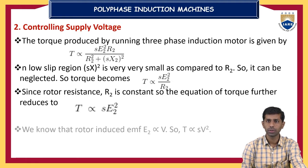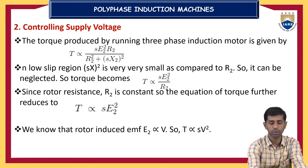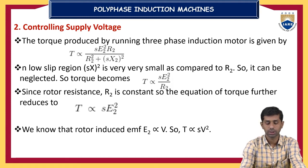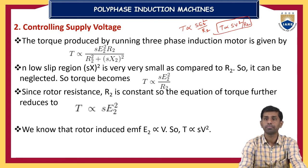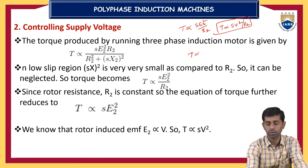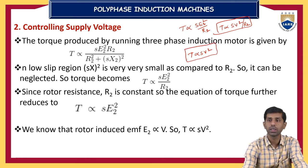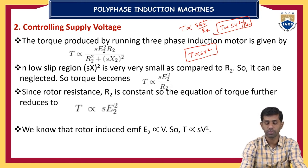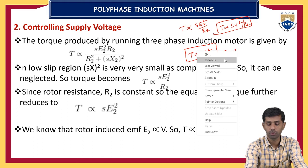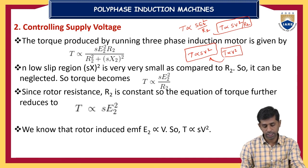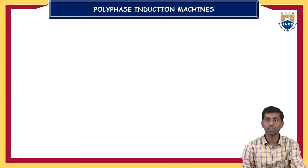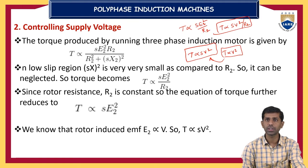Another method is controlling the supply voltage. We know the torque relation: torque is proportional to slip times the square of induced EMF in the rotor divided by R2, which can be written as torque proportional to s × V² / R2, since E2 is proportional to V. Torque is very sensitive to changes in supply voltage. At the time of starting, torque is proportional to V². So by changing the supply voltage, we can effectively change the speed of the induction motor.